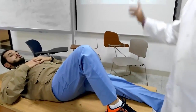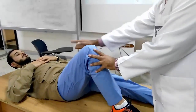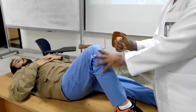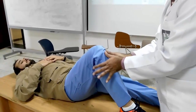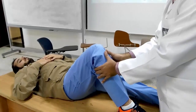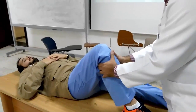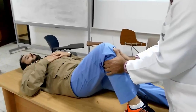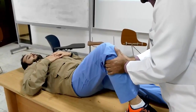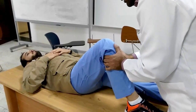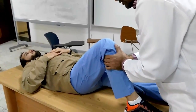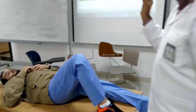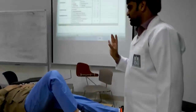Compare to the other side. For PCL, the same position — patient supine, 90-90. Place thumbs over the tibial tuberosity with fingers on the posterior side, then push the tibia posteriorly. If the patient complains of pain or instability, the test is positive for PCL.